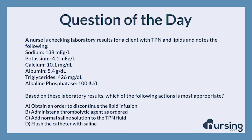A nurse is checking laboratory results for a client with TPN and lipids and notes the following: Sodium, 138 mEq per liter. Potassium, 4.1 mEq per liter. Calcium, 10.1 mg per deciliter. Albumin, 5.4 g per deciliter. Triglycerides, 426 mg per deciliter. Alkaline phosphatase, 100 international units per liter.